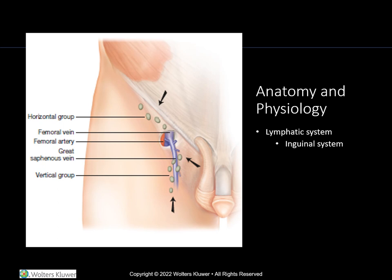In this picture, you can see the placement of the femoral artery in relation to the horizontal and vertical chains.